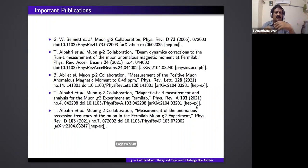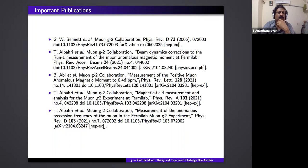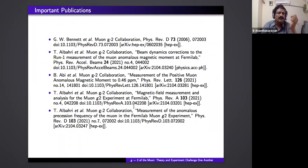The key publications include the original Brookhaven g minus two paper, and four publications released on April 7th. One published in Physical Review Letters gives the measurement of the positive muon anomalous magnetic moment to 0.46 ppm. The other three cover beam dynamics, magnetic field measurement, and the precision frequency measurement methodology.